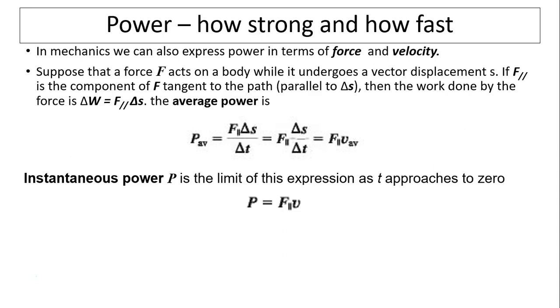In mechanics, we can also express power in terms of force and velocity. Suppose that a force F acts on a body while it undergoes vector displacement. If F parallel is the component of F tangent to the path, then work done by this force is delta W equals F parallel times delta S. So the average power equals work over time, which is F parallel times delta S over time. Delta S over time is velocity.